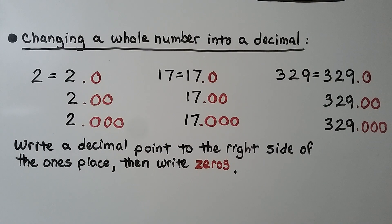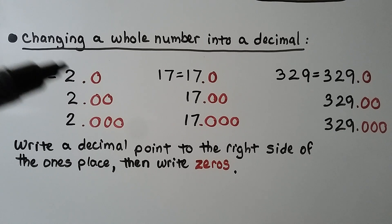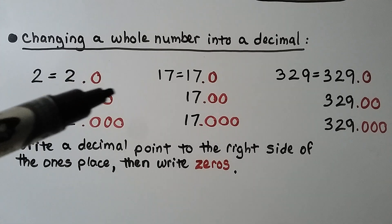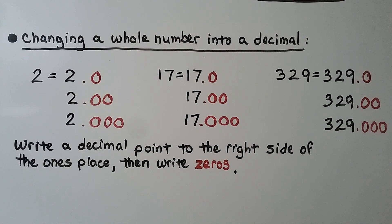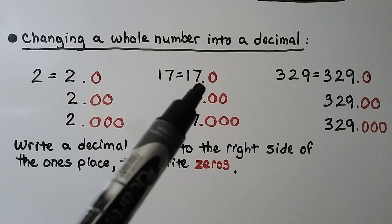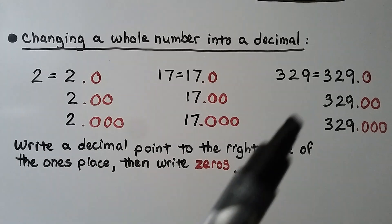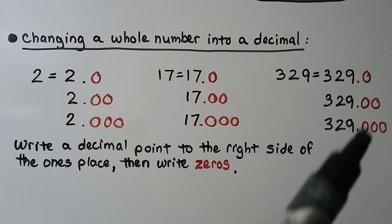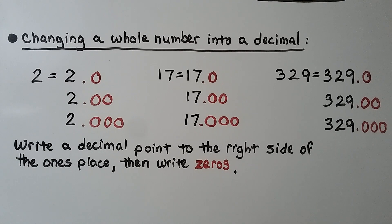It's very easy to change a whole number into a decimal. We have the whole number 2 — we just add a decimal point and a zero. We can add a decimal point and two zeros or three zeros. Here we have 17 as a whole number; we just add a decimal point and some zeros. Even larger numbers like 329 — we add a decimal point and some zeros to the right side of the ones place.